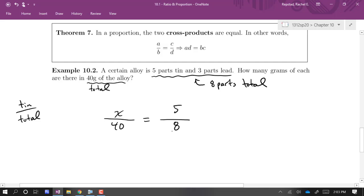We can certainly take the cross products if you want to use theorem seven. If you do that, we end up with eight X equals 200.